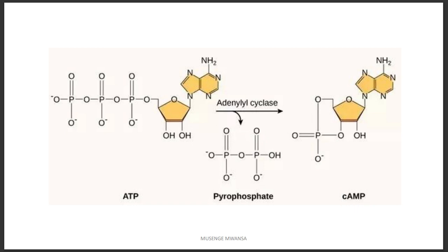Cyclic AMP plays a role in the permeability of the cell membrane, allowing passage of sodium ions, chloride ions, and water. An increase in cyclic AMP causes the cell membrane to open chloride channels, allowing chloride ions to move from the body's interior into the lumen of the intestines. As chloride ions move, they attract water with them, causing an accumulation of water in the intestinal lumen.